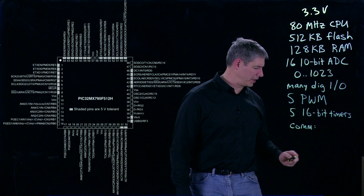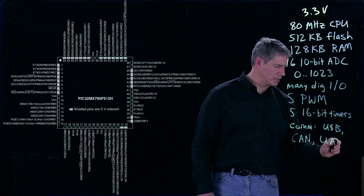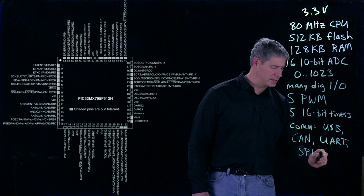including USB, CAN or control area network, UARTs for things like RS-232, SPI or Serial Peripheral Interface, I2C or Inter-Integrated Circuit, and Ethernet.